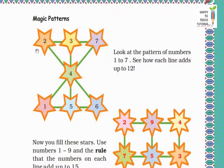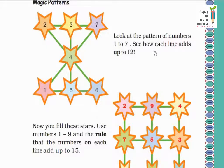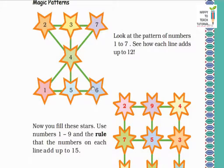Here one magic pattern is given, and the rule of this pattern is to use numbers 1 to 7, and the rule is that the numbers on each line add up to 12. Let's check one by one. For this line: 2 plus 3 plus 7 equals 12. For this line: 7 plus 4 plus 1 equals 12. Same way: 2 plus 4 plus 6 equals 12. And 6 plus 5 plus 1 equals 12. Also 3 plus 4 plus 5 equals 12. So each line adds up to 12.